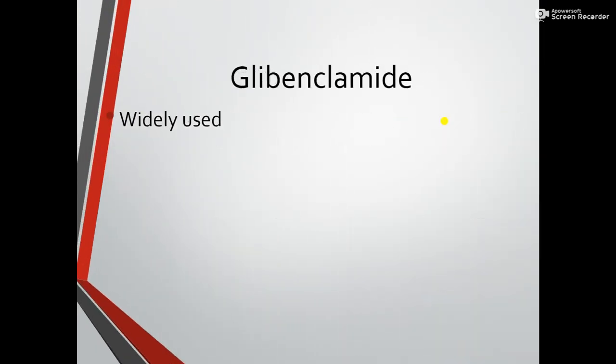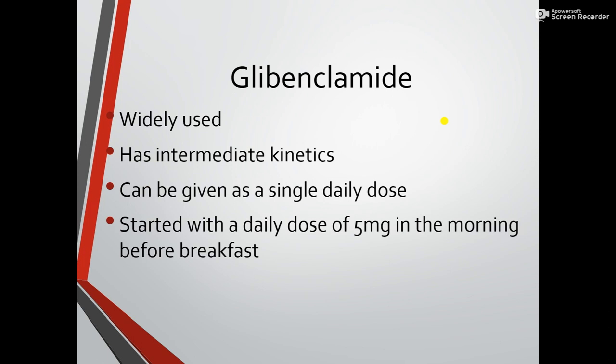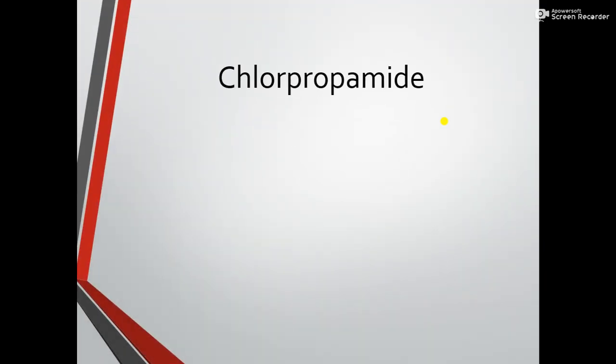The second drug is glibenclamide, which is widely used and also belongs to the hypoglycemic agents. It has intermediate kinetics and can be given as a single daily dose. Glibenclamide is started with a daily dose of 5 milligrams in the morning before breakfast, and the maximum dose is 15 milligrams per day.